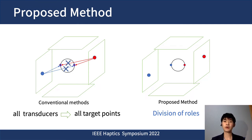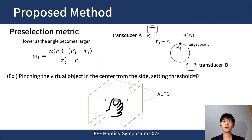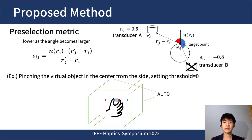So we try to form the focus efficiently by preselecting transducers to be used for each target point. When the object itself becomes an obstacle, the angle between the normal of the object's surface at the target point and the direction from the target point to the transducer is considered to be large. Therefore, we introduce the preselection metric whose value becomes lower as the angle becomes larger. The transducer that is above the threshold is preselected for each target point before the optimization calculation.